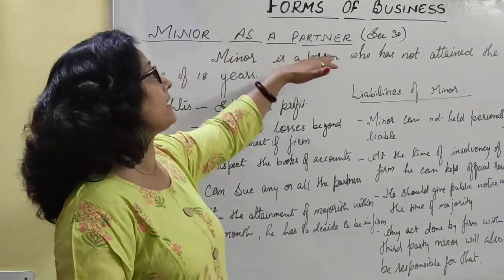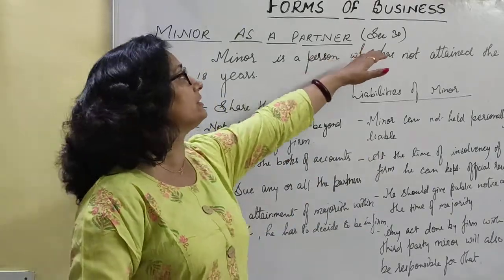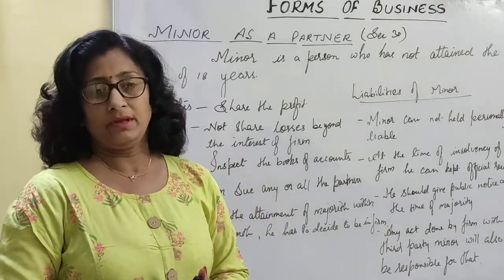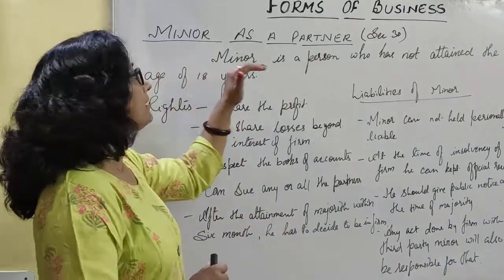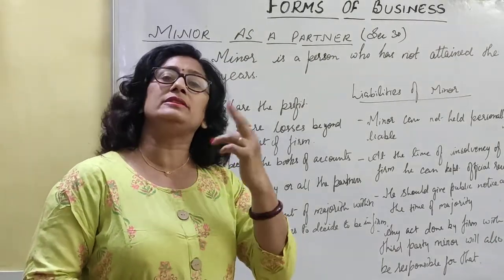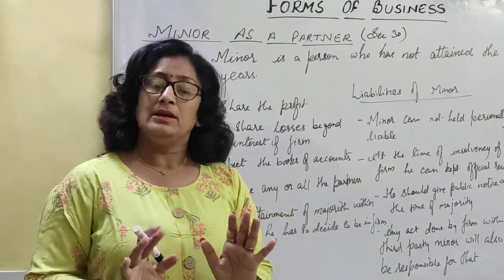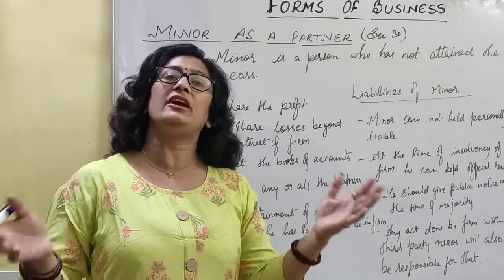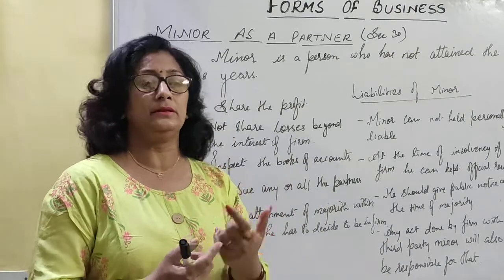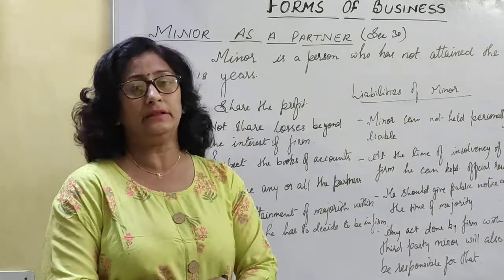Minor as a partner: in the Partnership Act 1932, under Section 30, it is mentioned that a minor could also be a partner of a firm. But a minor can only be a partner when the consent is given by the rest of the other partners. With the mutual consent of all existing partners, they can admit a minor as a partner in their firm.